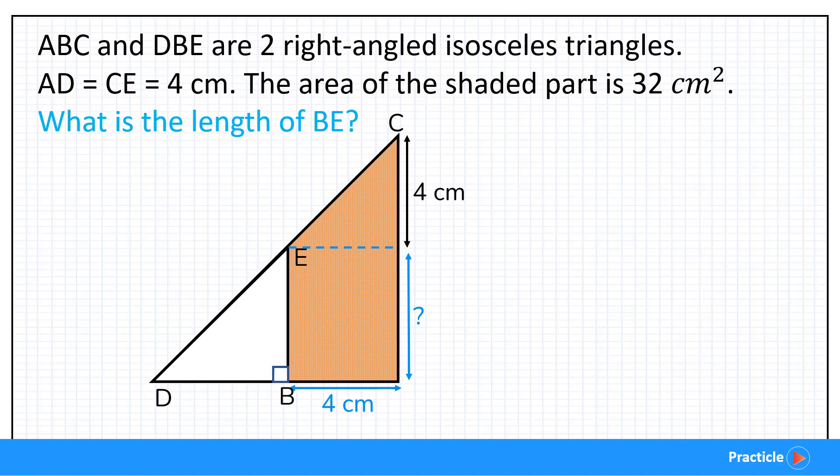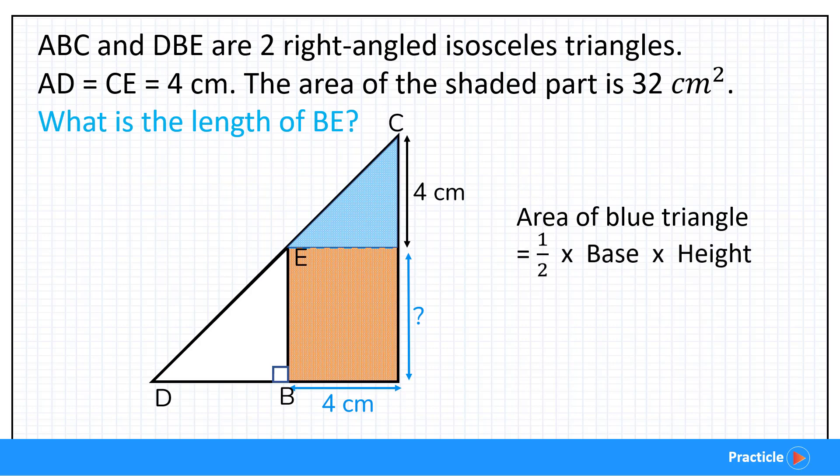Now looking at the triangle over here, what can you tell? Can you see that it has a base of 4CM and a height of 4CM? Now let's make use of this to find the area of this blue triangle. To find the area of a triangle, we are going to take half times base times height. And because we know that the base and height is 4CM, half times 4 times 4 is going to give us 8CM. Do you get that?